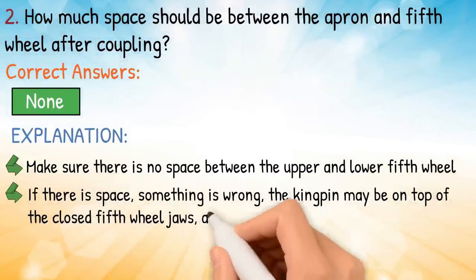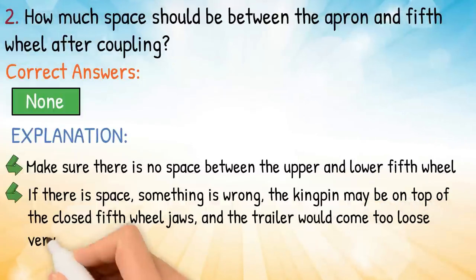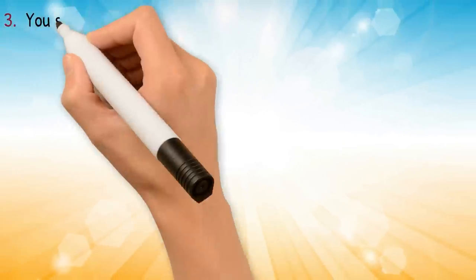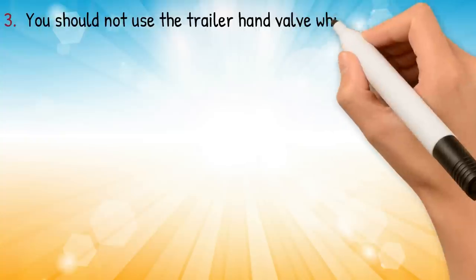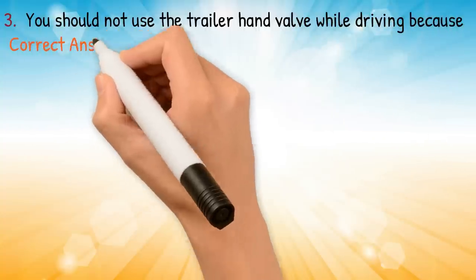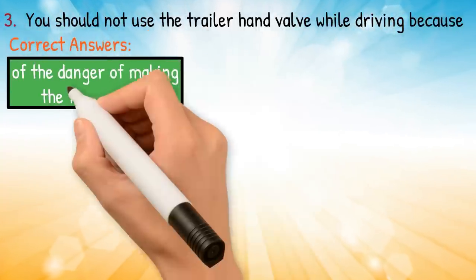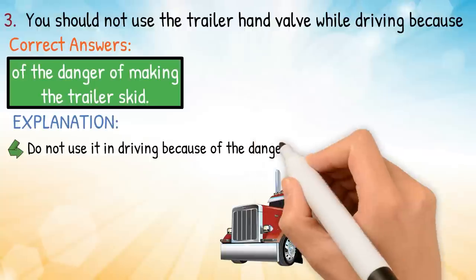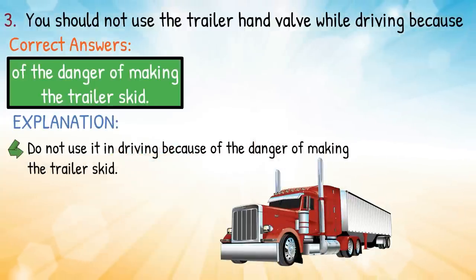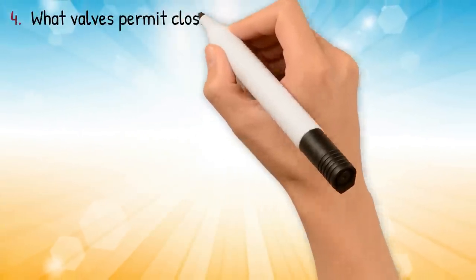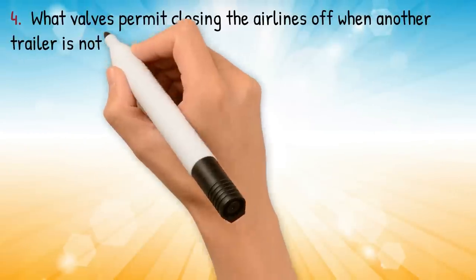The kingpin may be on top of the closed fifth wheel jaws and the trailer could come loose very easily. Question three: you should not use the trailer hand valve while driving because — correct answer: of the danger of making the trailer skid. Explanation: do not use it while driving because of the danger of making the trailer skid.